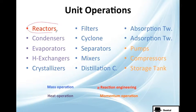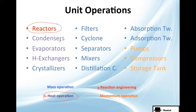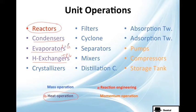Now let's look at some unit operations. The ones about reactor engineering cover anything that reacts — you can call it a reactor. For heat transfer unit operations, you can condense, evaporate, or simply exchange heat. A heat exchanger increases or decreases temperature, evaporation changes liquid to gas, and a condenser changes gas to liquid. You could also have a freezer, and so on.